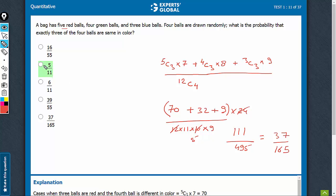Don't worry about this, that is just a dummy answer. The right answer is option E, 37 upon 165.